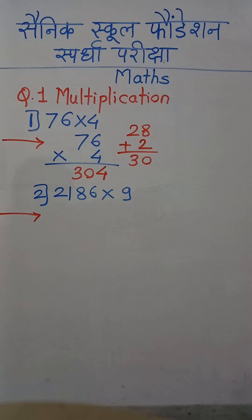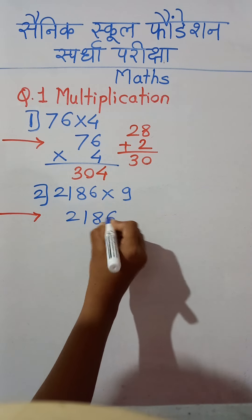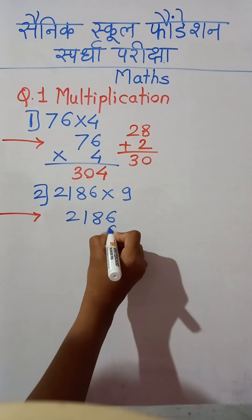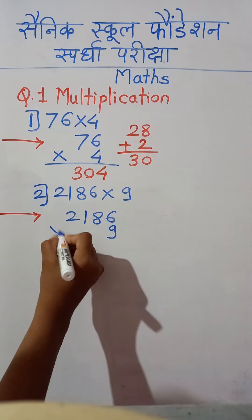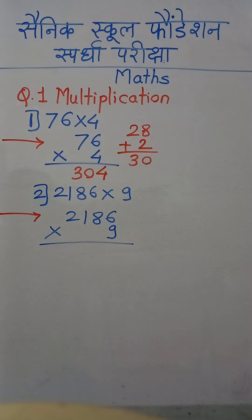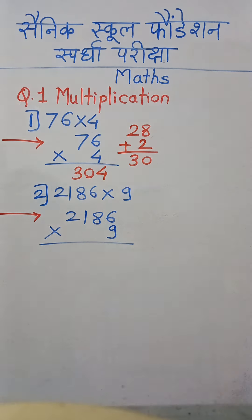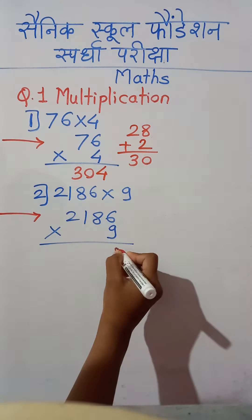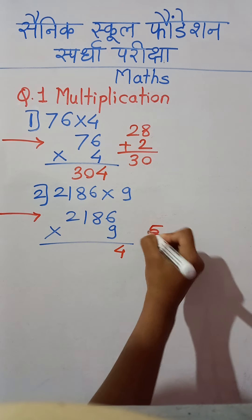We write this example vertically: 2186, then write 9 at the units place digit below 6, and give the sign of multiplication. Start doing this multiplication from units place digit: 9 multiplied by 6 is 54. So we write 4 here and 5 will be carried.